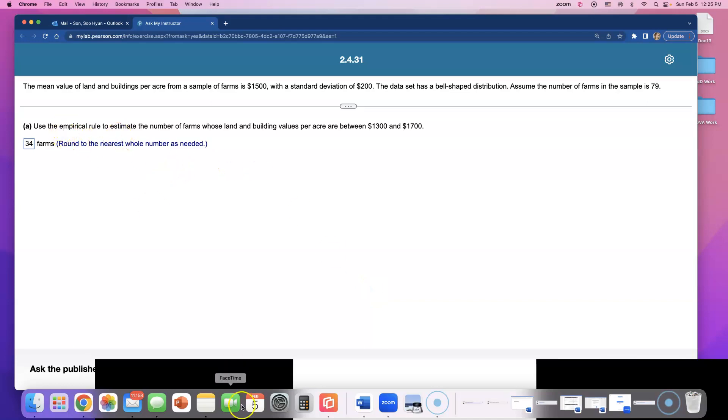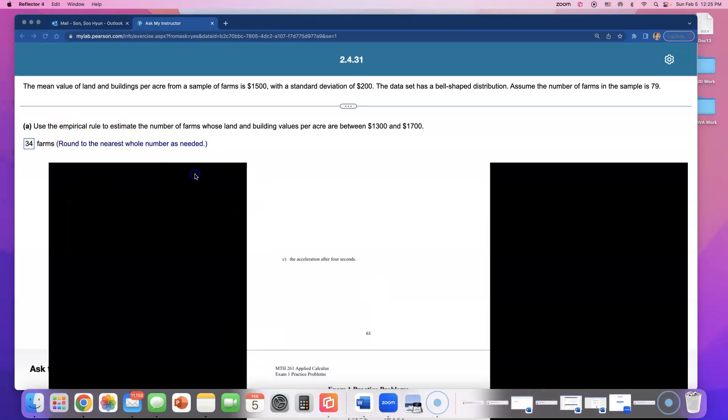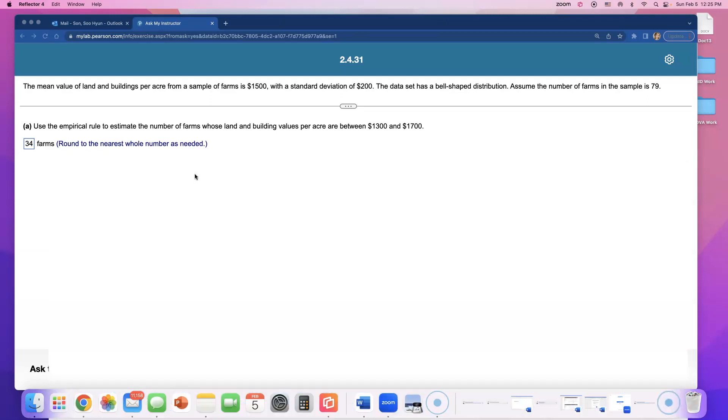This question is on empirical rule. Since we don't know the normal calculator yet, you would do this by sketching out the normal distribution. Take a look, you would draw a bell curve.